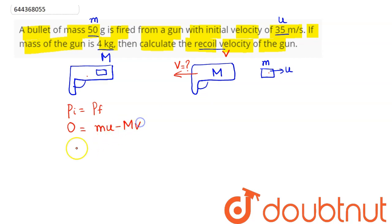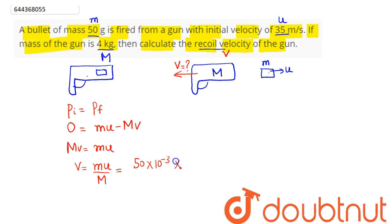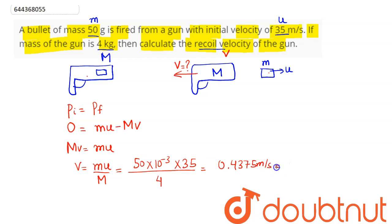The final momentum of the bullet is plus mu, and of the gun is minus Mv. Hence: Mv = mu, so the recoil velocity v = mu divided by M. The value of small m is 50 grams, i.e., 50 × 10⁻³ kg; u is 35 m/s; and capital M is 4 kg. This gives v = 0.4375 meters per second, approximately 0.44 meters per second, opposite to the direction of the bullet's velocity.